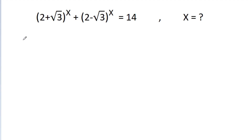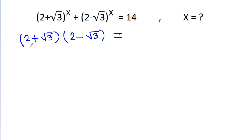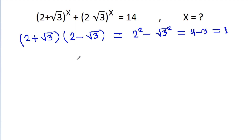If we multiply (2 + √3) and (2 - √3), then using the identity (a + b)(a - b) = a² - b², it will be equal to 2² minus (√3)², which is 4 minus 3, that will be 1. So (2 - √3) will be equal to 1 divided by (2 + √3).